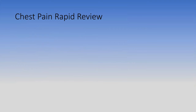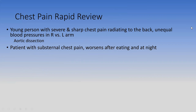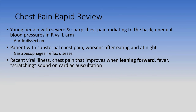Rapid review—chest pain: Sharp severe chest pain radiating to the back with unequal arm pressures is classic aortic dissection—the descending aorta is posterior, and the dissection can block a subclavian. Substernal chest pain worse after eating and at night is GERD—the esophagus is also substernal, not just the heart. Recent viral illness now with chest pain that improves leaning forward, fever, and a scratching friction rub on auscultation is acute pericarditis—treat with NSAIDs and colchicine to prevent recurrence.